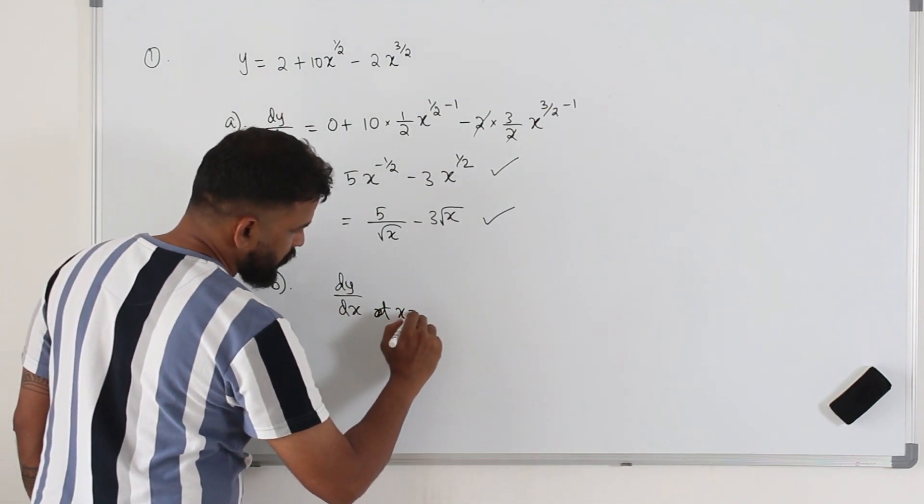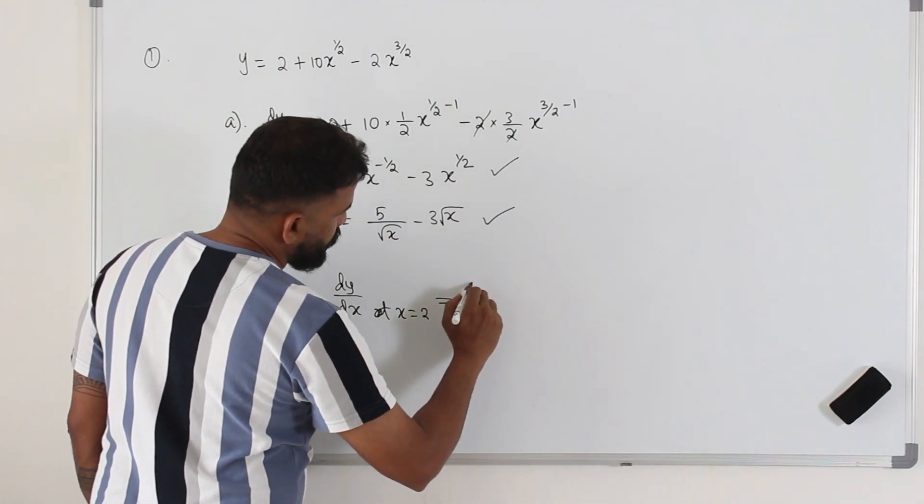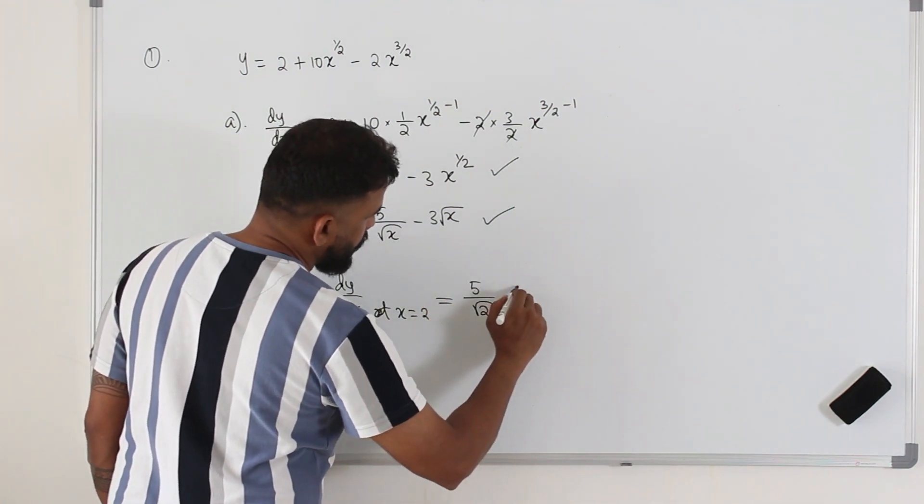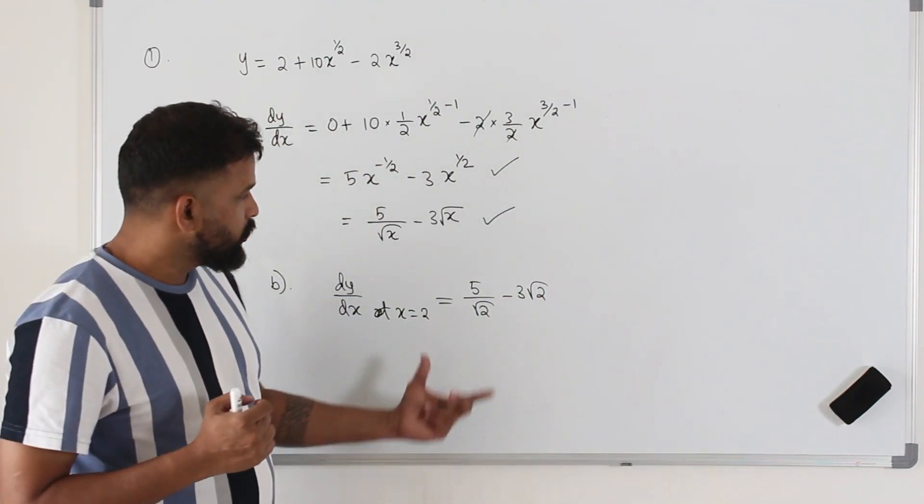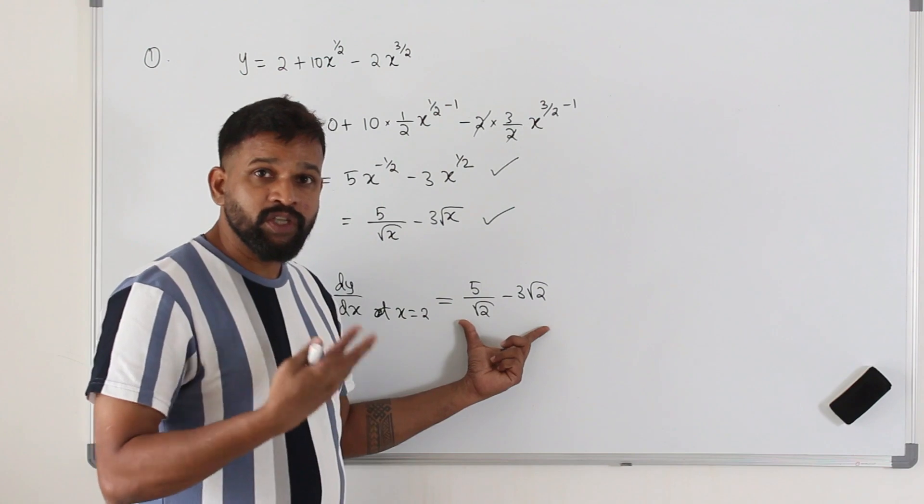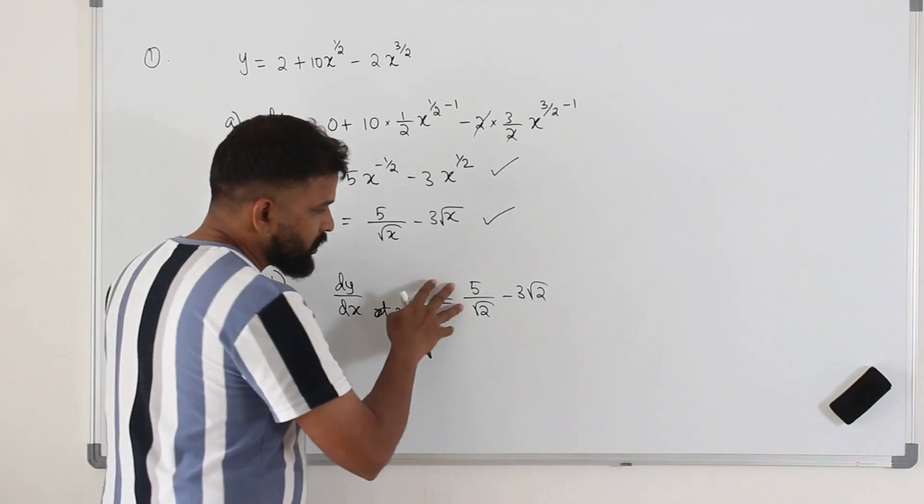At x equals 2. So it's going to be 5 over root 2 minus 3 root 2. They want the exact value. So you cannot leave it like this. You need to simplify. 1 is a fraction.